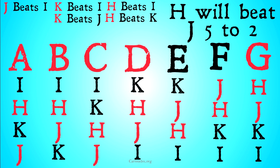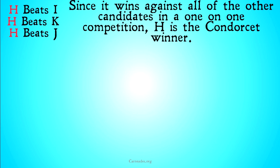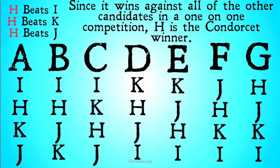H is declared our Condorcet winner because H will beat J as well, 5-2. So H has won against all other competitors in head-to-head matchups, making H the Condorcet winner. Since it wins against all other candidates in a one-on-one competition, H is the Condorcet winner.